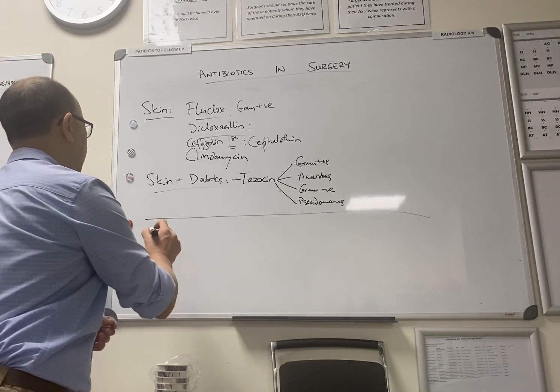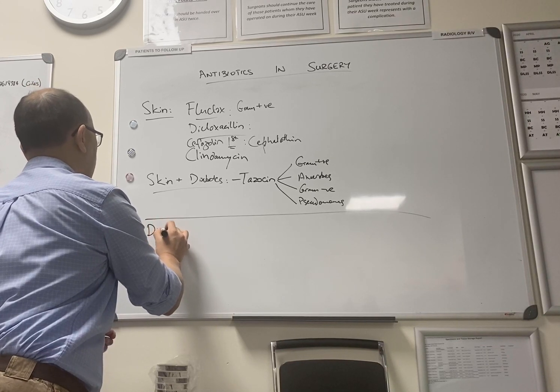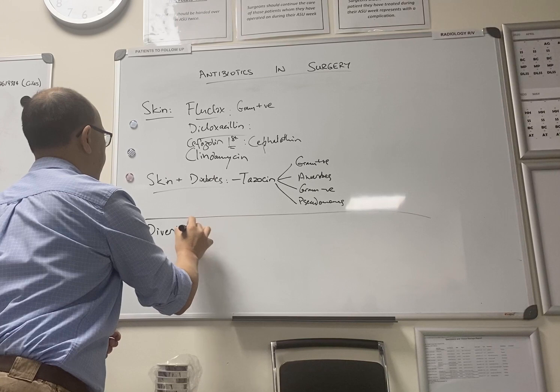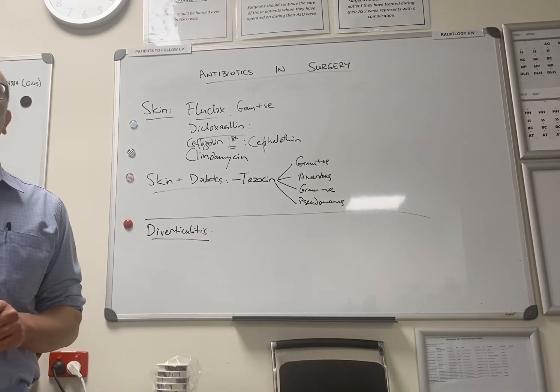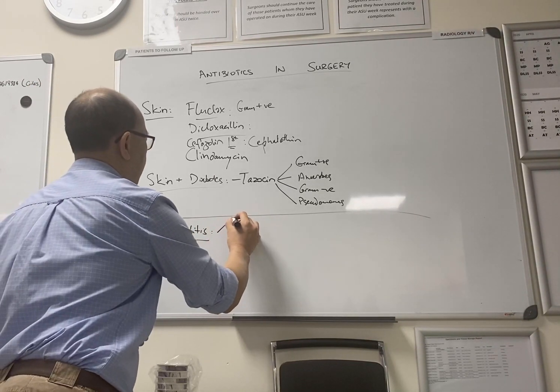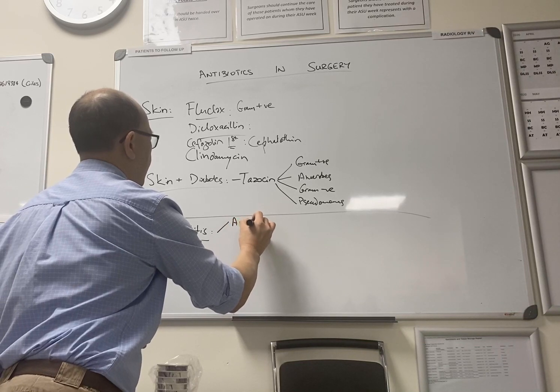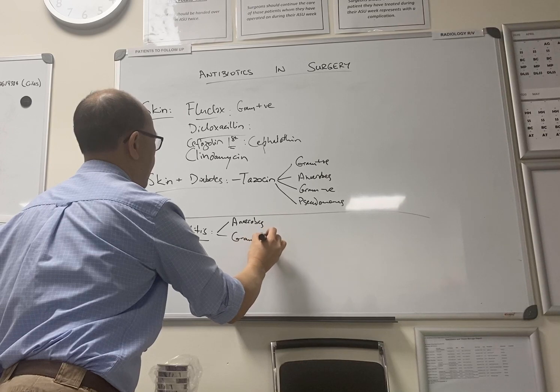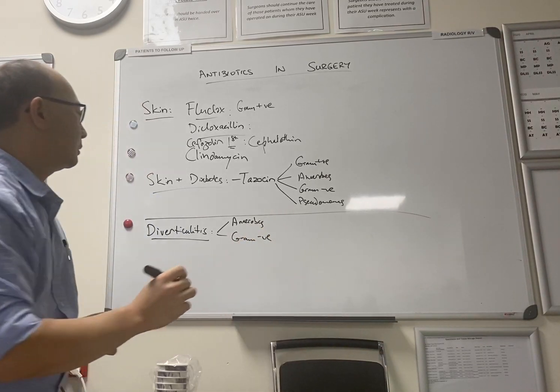So that's skin and soft tissue lines in the abdomen. What types of things do we have to worry about? Say we're talking about diverticulitis. Yeah, anaerobes and gram negatives. Anything else?